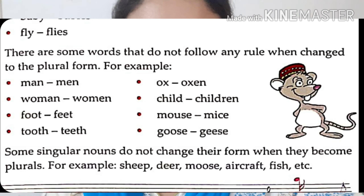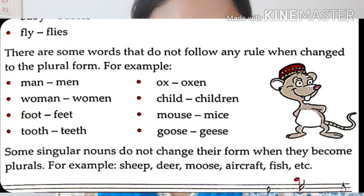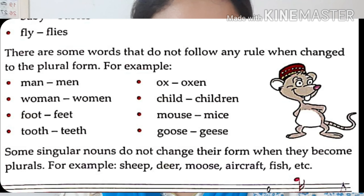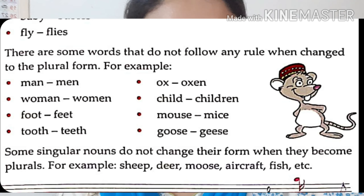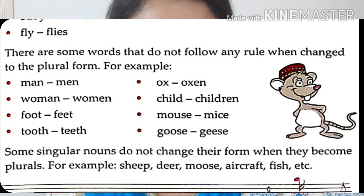Some singular nouns do not change their forms when they become plural. For example: sheep, deer, moose, aircraft, fish, etc. These words will remain the same — they won't change even if they become plural. Now, at the end of the video, I have added a clip of few singular and plural nouns. I hope that will be helpful for you all. Thank you students, bye.